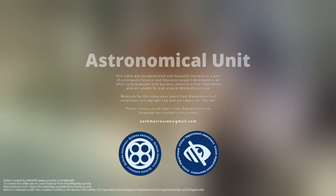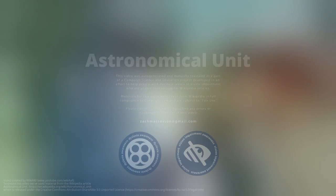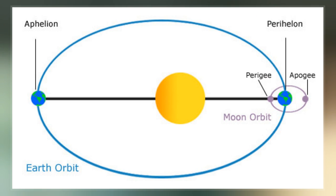The astronomical unit is a unit of length, roughly the distance from Earth to the Sun and equal to about 150 million kilometers.